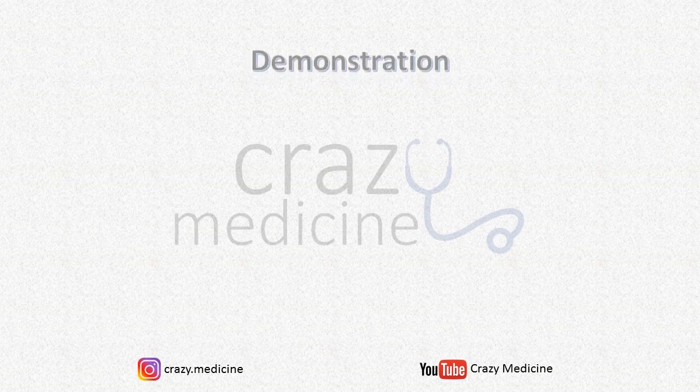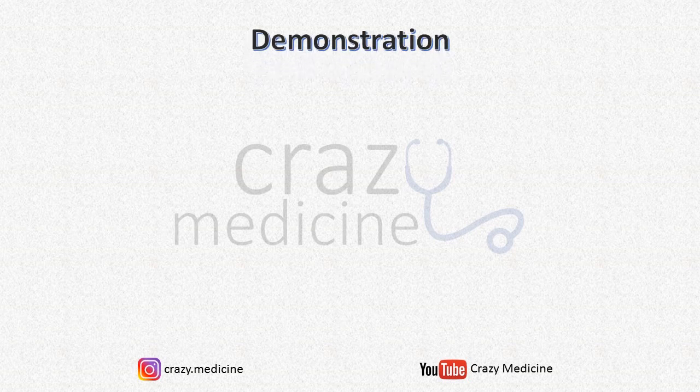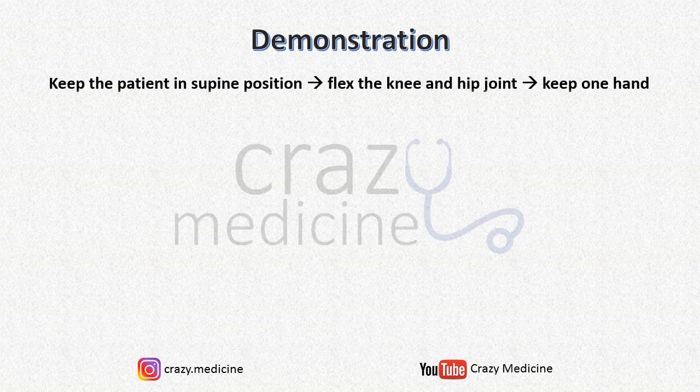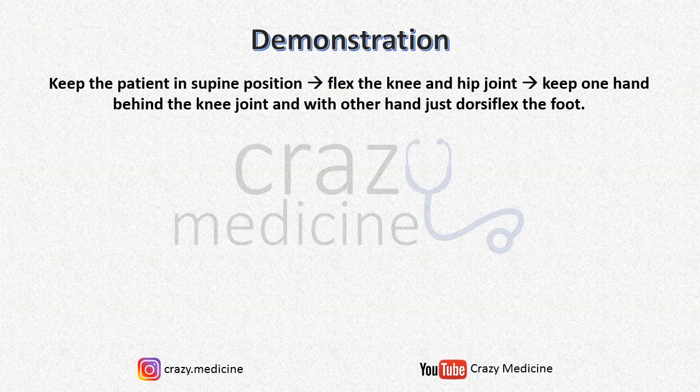Now with the help of video, see how clonus is demonstrated. Here we have demonstrated ankle clonus. Note the proper method: keep the patient in supine position, flex the knee and hip joint, then keep one hand behind the knee joint — not on the calf muscles — and with the other hand, just dorsiflex the foot. This is the proper method for eliciting ankle clonus.